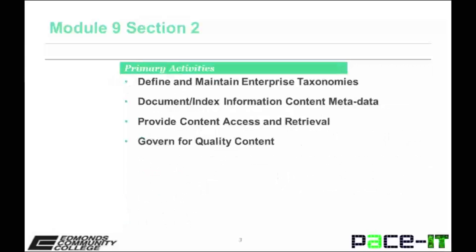Primary activities as described in the DAMA DMBOK include the following: define and maintain enterprise taxonomies, document and index information content metadata, provide content access and retrieval, and govern for quality content.